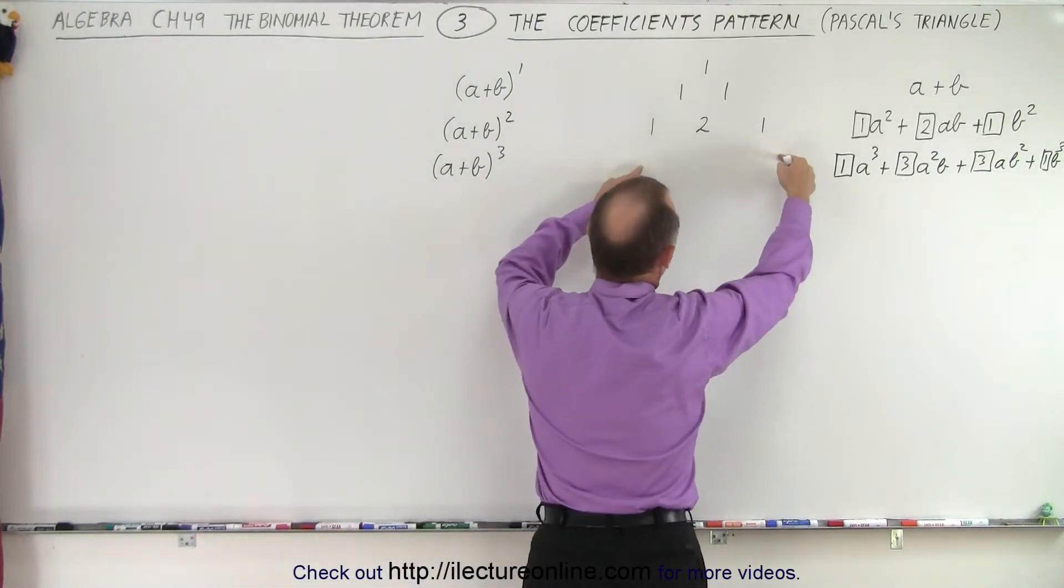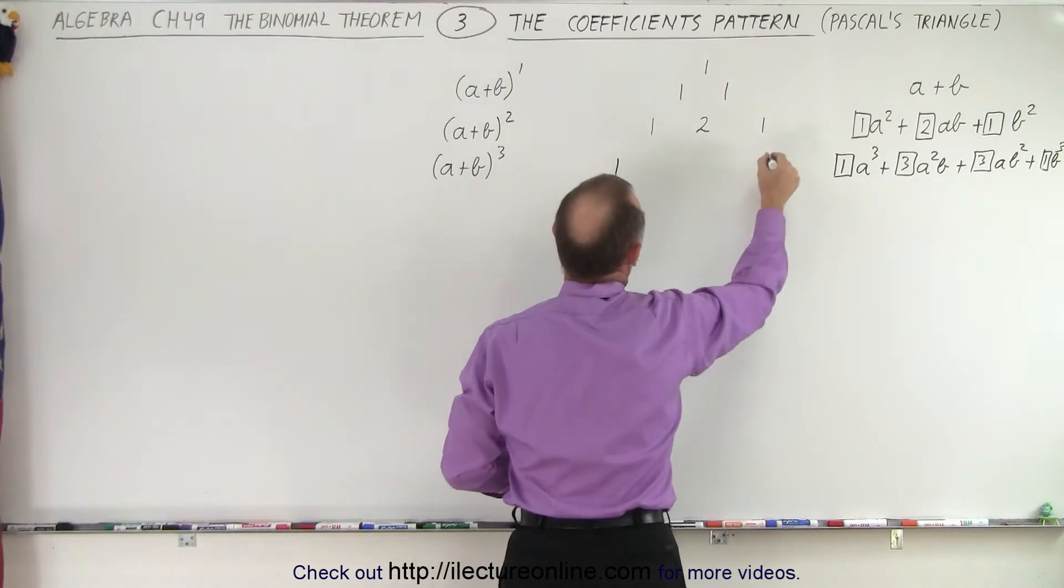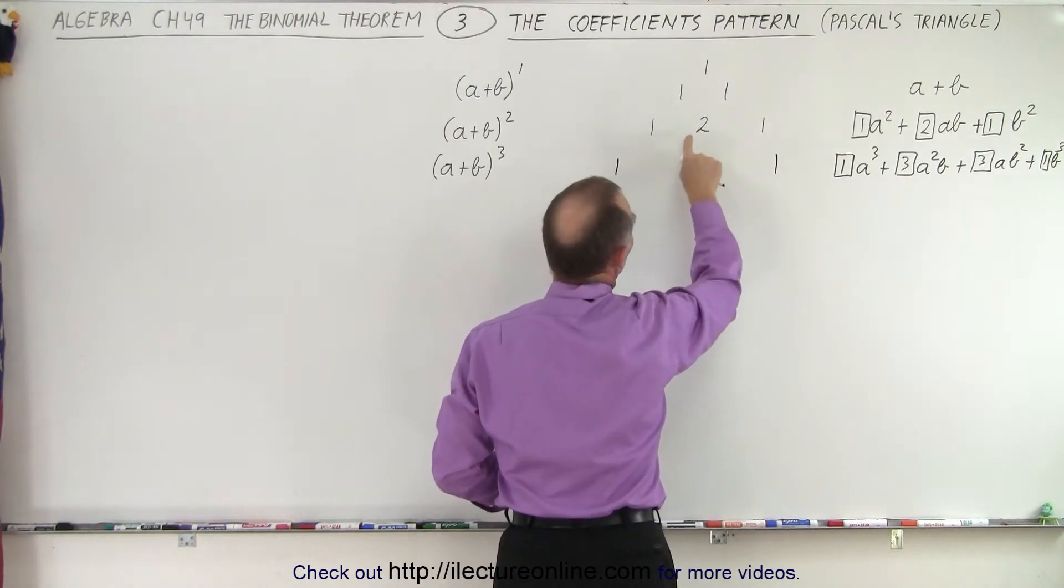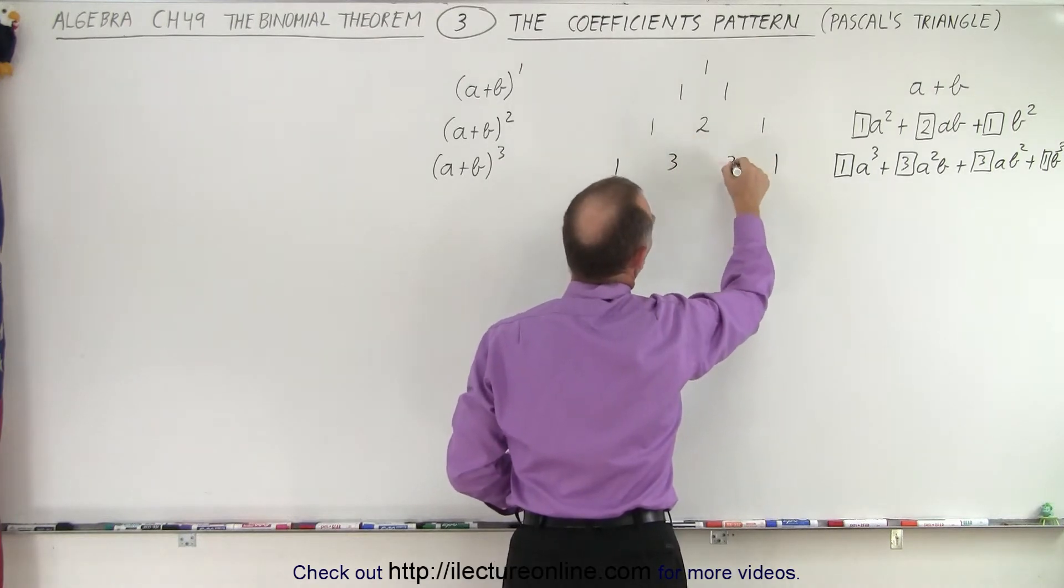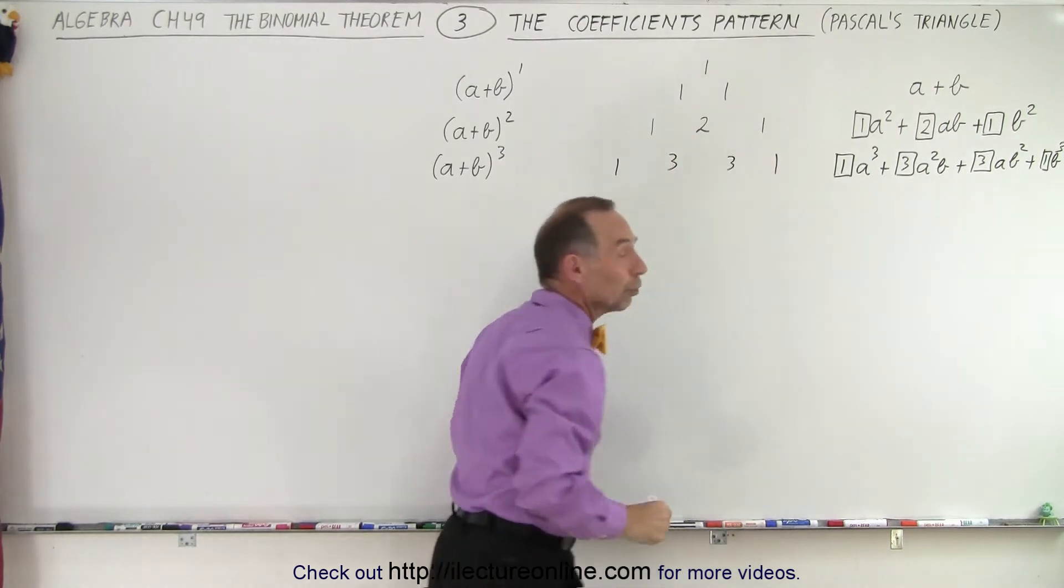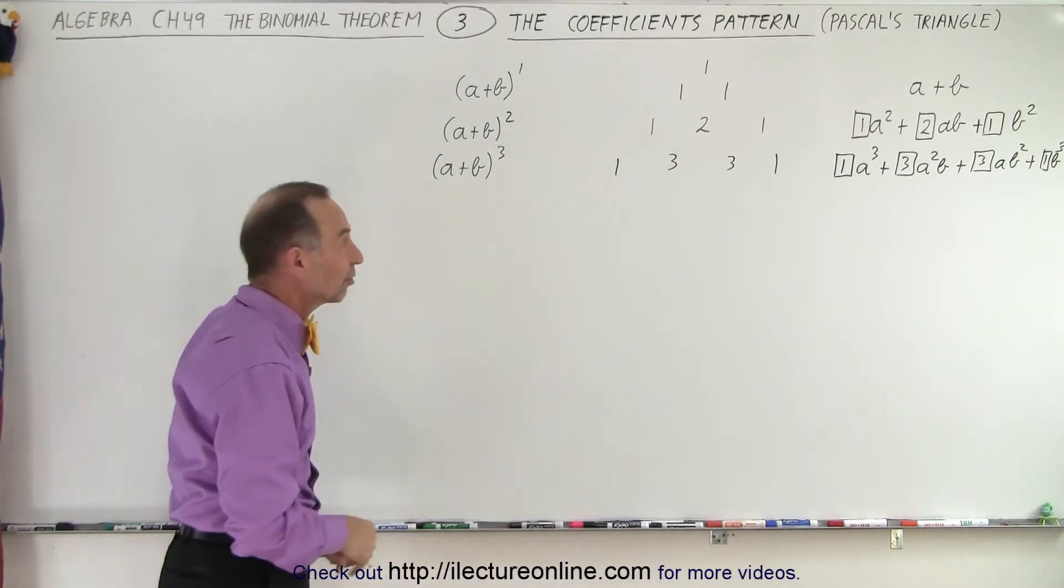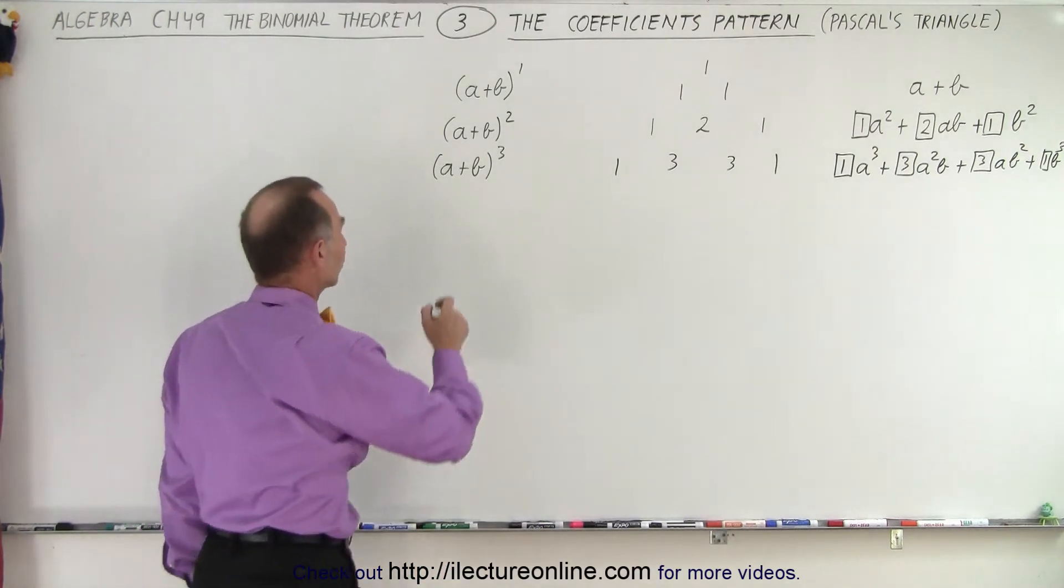So we have a 1 and a 1 here. Now look at these two. We get 1 plus 2. That adds up to 3. 2 plus 1. That adds up to 3. And now we have the four numerical coefficients for our next expansion. And that's how the pattern works.